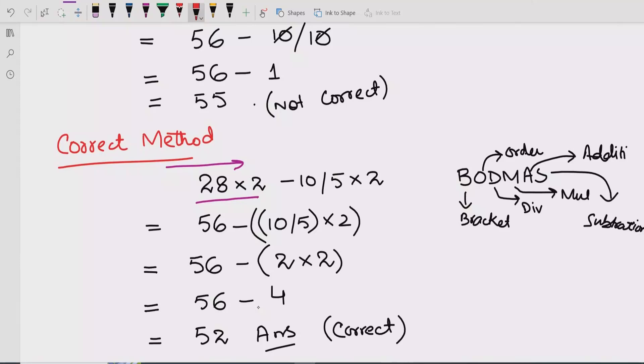First we will multiply 28 by 2, then 10 divided by 5, and after that the answer we will get from 10 divided by 5, we will multiply by 2. In the end we will minus 56 minus 4 which equals to 52. I hope you understand how you can solve this question correctly using the BODMAS method.